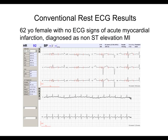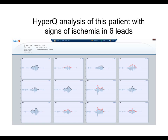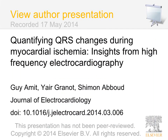We'll conclude with an example from a resting ECG test. This slide shows the conventional ECG results from a 62-year-old female who presented to the emergency department with acute chest pain. The conventional ECG does not show any signs of acute myocardial infarction; however, this patient was ultimately diagnosed with non-ST elevation MI. The HyperQ analysis from the same test shows signs of ischemia with six positive leads marked in red. This is another example of the potential of HFQRS to improve the results of ECG tests.